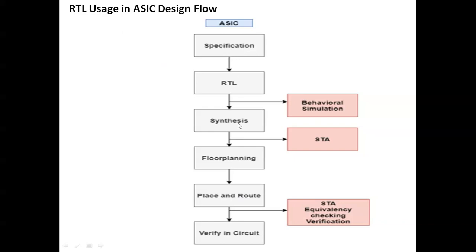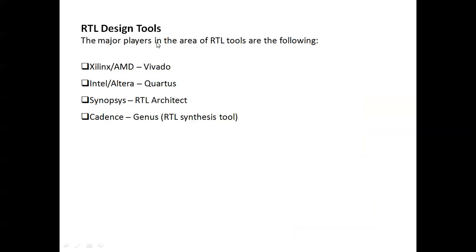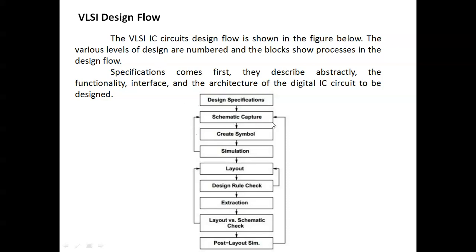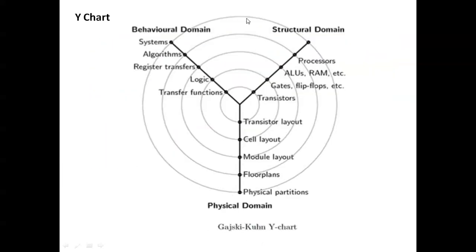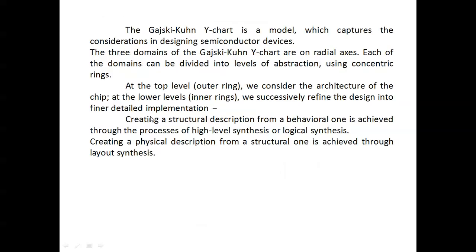For the ASIC design flow, the steps are similar — specification, RTL coding, behavioral simulation, and synthesis — but floor planning is added before place and route. After place and route, the circuit is verified. RTL tools include Xilinx, Intel, Ultra, Synopsys, and Cadence as RTL synthesis tools. The VLSI design flow covers design specification, schematic capture, symbol creation, simulation, layout, design rule check, and extraction. The Y-chart for VLSI design shows the behavioral domain, structural domain, and physical domain.